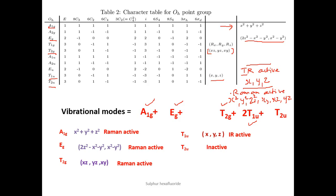To summarize: A₁g, Eg, and T₂g are Raman active; T₁u is IR active; and T₂u is an inactive mode.